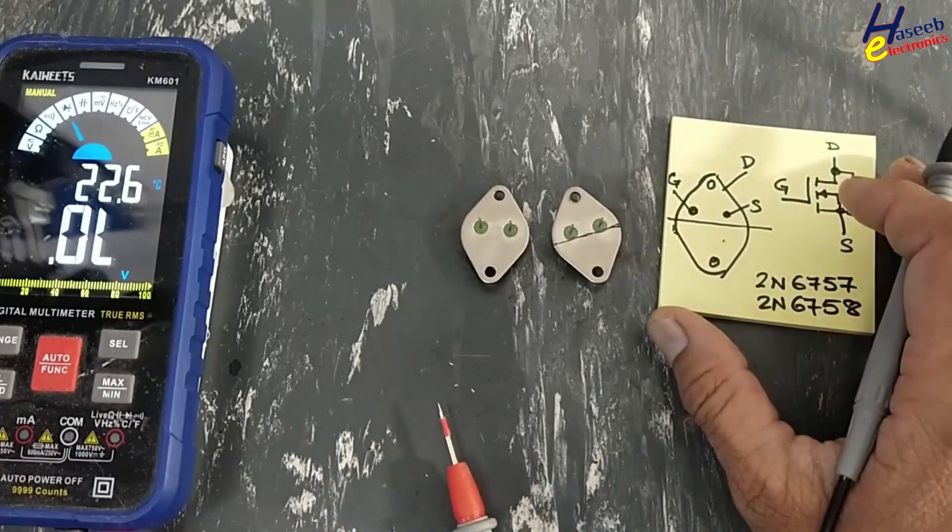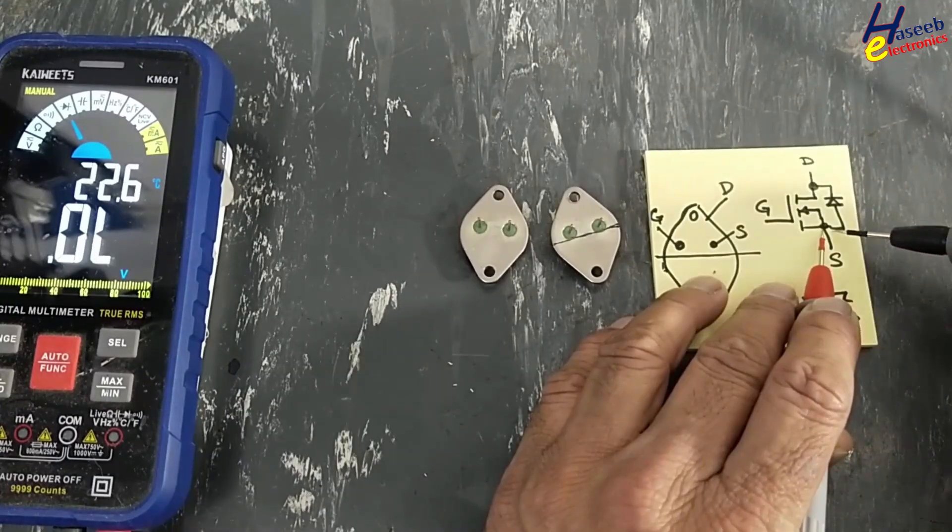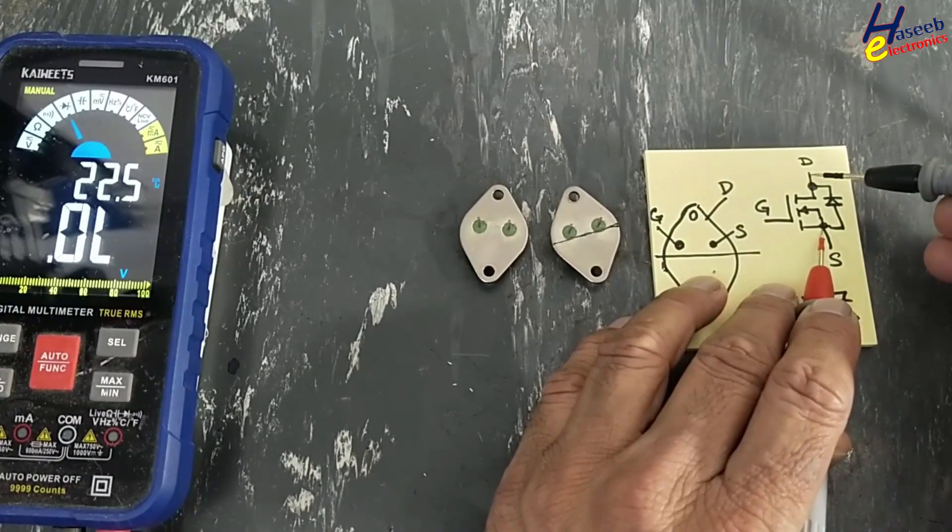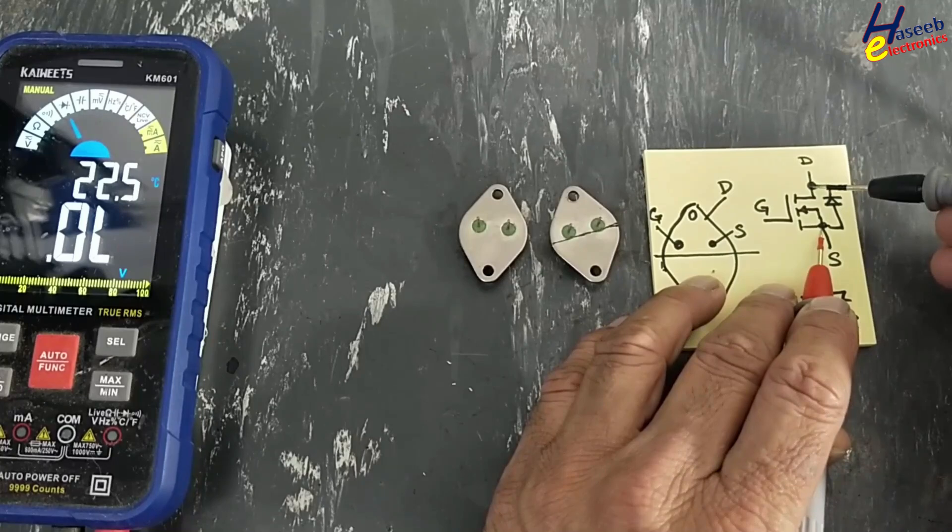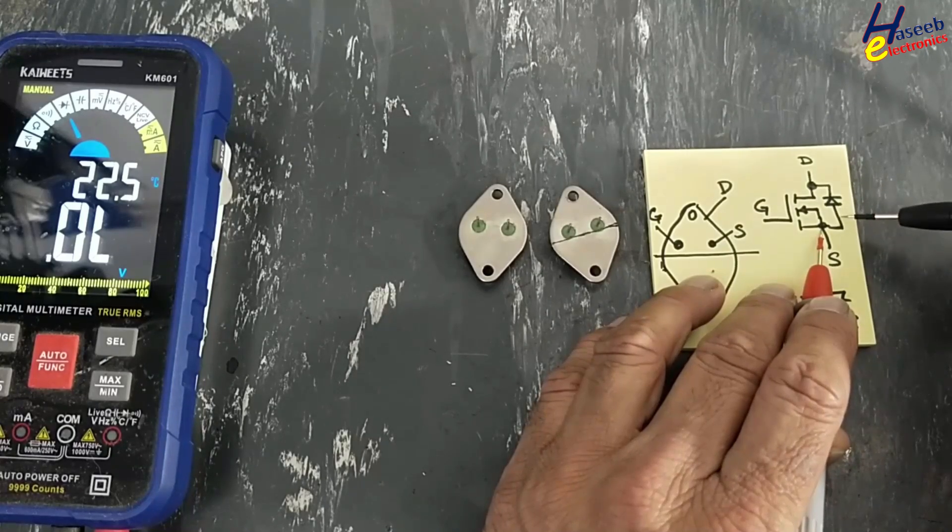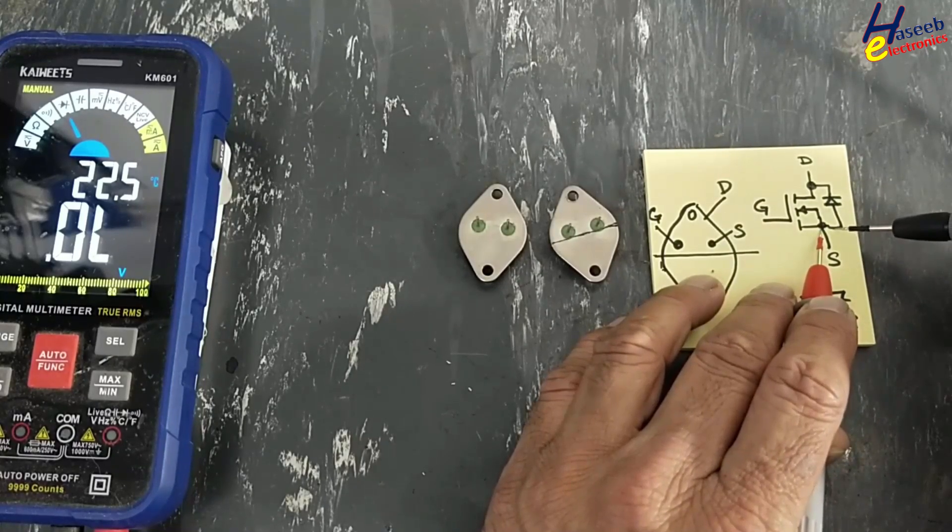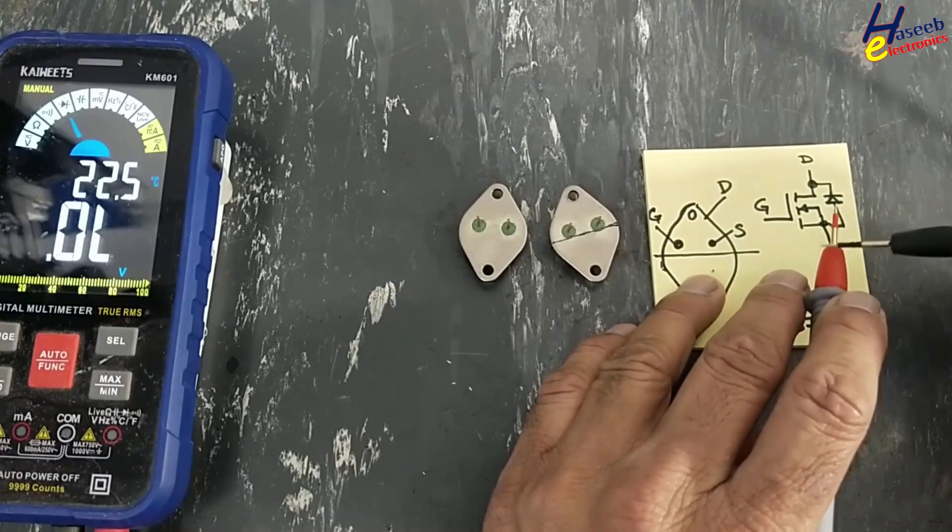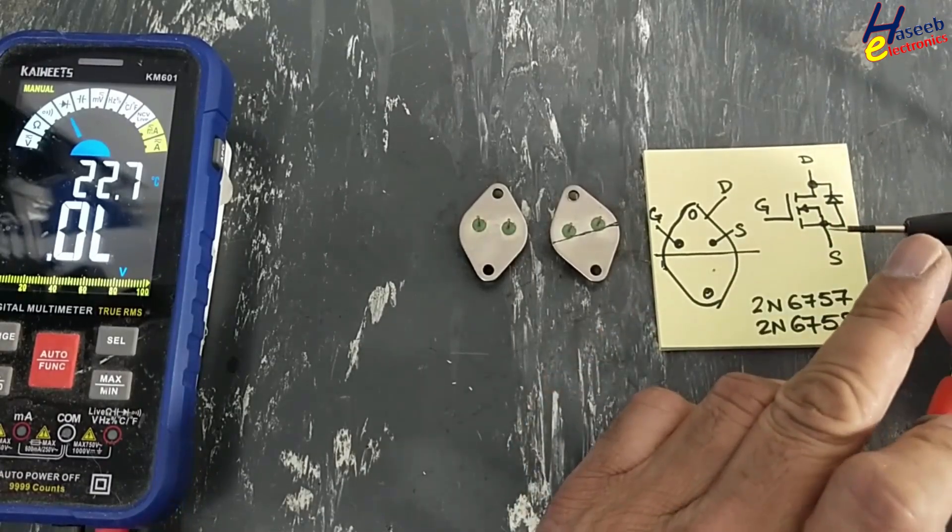It is N-channel. From source to drain there is one parasitic diode, a body diode or freewheeling diode. Red lead at source, black lead at drain.